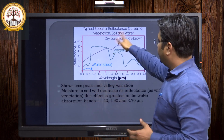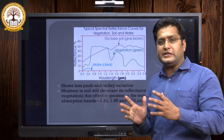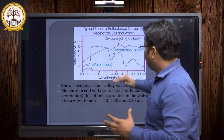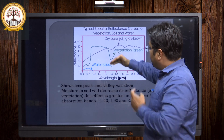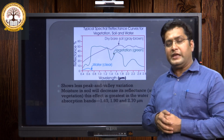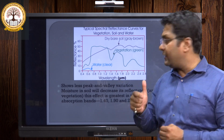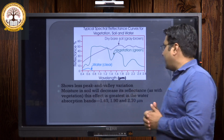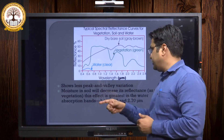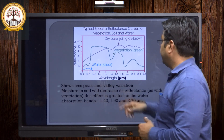The reason is that the behavior of vegetation is different from the behavior of soil. But when we compare reflectance and absorption behavior, we can find some similarities. Moisture in the soil will decrease its reflectance, similar to vegetation, and this effect is greatest in the water absorption band.